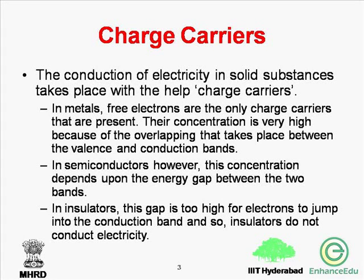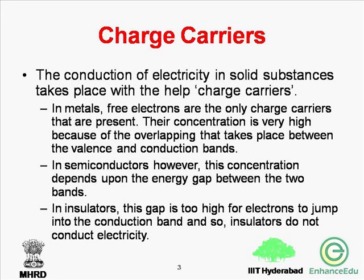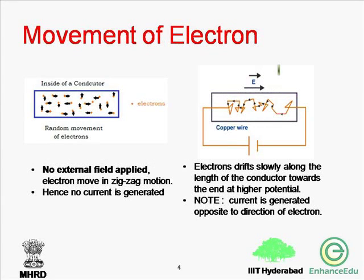Based on the charge carrier concentration, solid substances can be metals, semiconductors, or insulators. In metals, electrons are the only charge carriers and their concentration is very high due to overlapping between the valence band and the conduction band. In semiconductors, the concentration depends on the energy gap between these two bands. In insulators, the gap is too high for electrons to jump from the valence band to the conduction band, so insulators do not conduct electricity at room temperature.